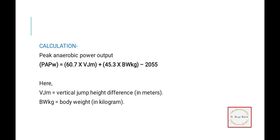First was without jump and the second after the jump. This gives peak anaerobic power output, PAPW. The formula is: VJ is the vertical height difference calculated in meters, BW is body weight in kg, and these are standard units: 60.7, 45.3, 2055. Put the values and you will get PAPW.